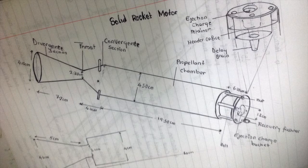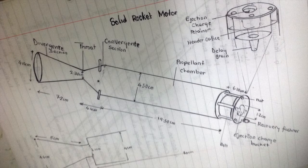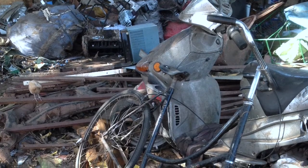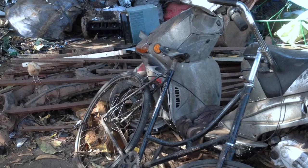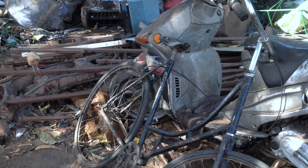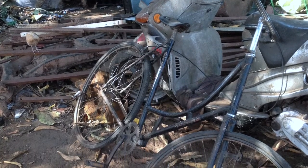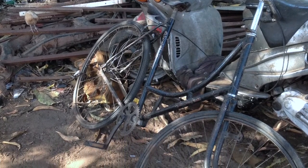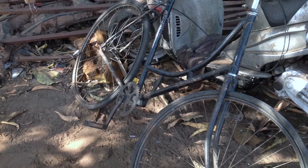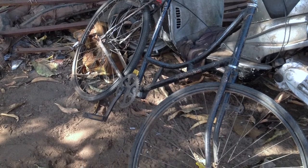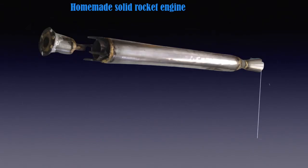When we talk about solid rocket propulsion, we use the word motor instead of engine. In a motor, the combustion chamber is elongated, as you're looking at in the diagram here. Now here we are at the dump site, looking for possible material that we can use for the construction of our vehicle. From here we're able to get scrap material to help build the design that I showed you on paper.